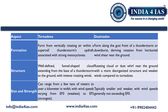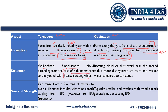Now, the major differences between tornadoes and Gustanados: in terms of formation, tornadoes form from vertically rotating air within a supercell thunderstorm in association with strong mesocyclones, whereas Gustanados form along the gust front of a thunderstorm or downburst, deriving their rotation from horizontal wind shear near the ground. In terms of structure, tornadoes have a well-defined funnel-shaped cloud extending from the base of a thunderstorm to the ground with intense rotating winds, whereas Gustanados have a rotating cloud or dust whirl near the ground with a more disorganized, weaker structure.